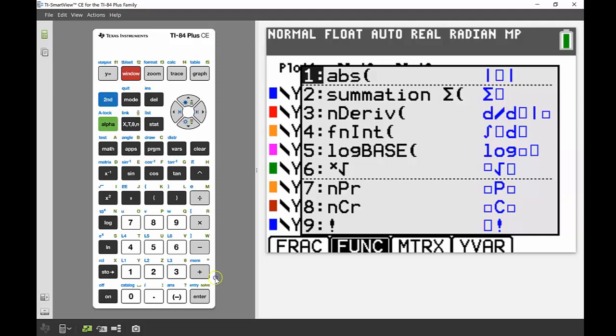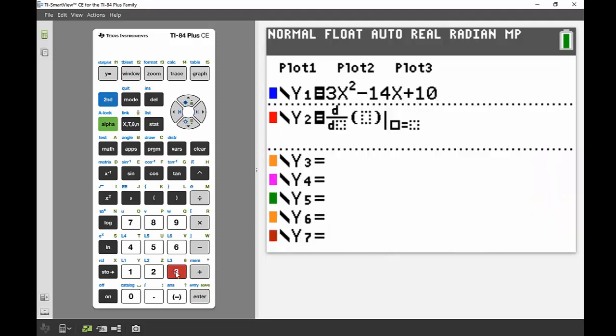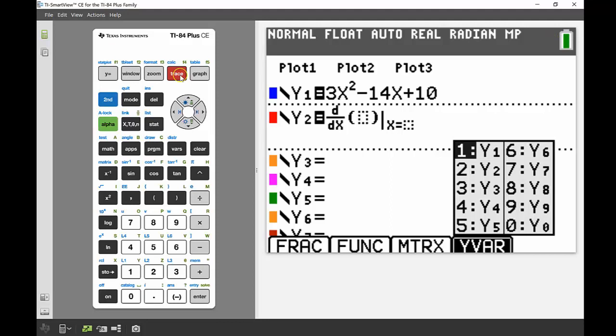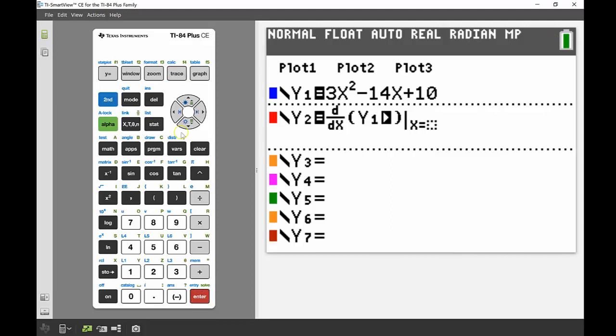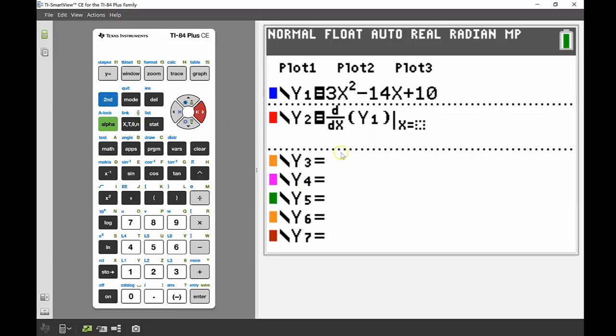So alpha f2 and then number three to bring up that derivative template. Again my variable is x. I'm sketching the derivative with respect to x of my y1. In this case I'm not finding x at a particular point. I want to find the derivative at all of those points, so I'm going to let my x equal to x there.